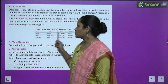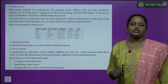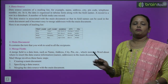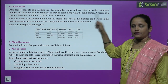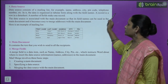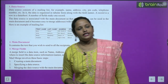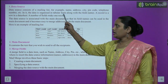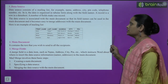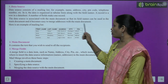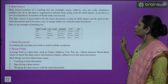Data source consists of a mailing list — for example, name, address, city, pin code, telephone number, etc. In it, the data is organized in tabular form along with the field name.